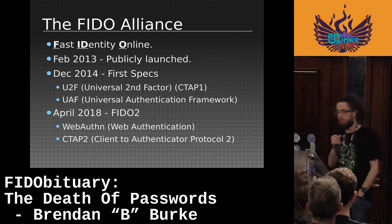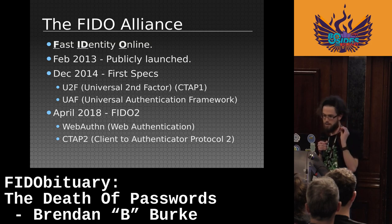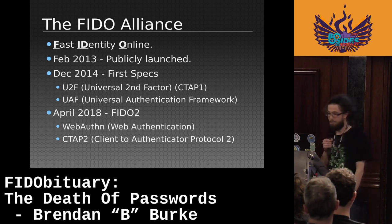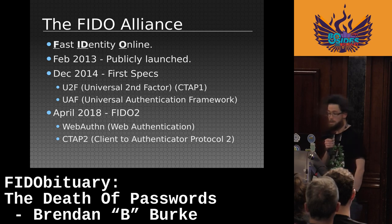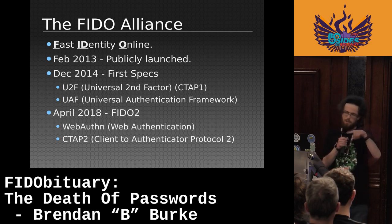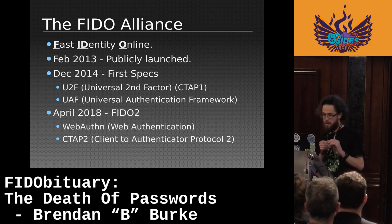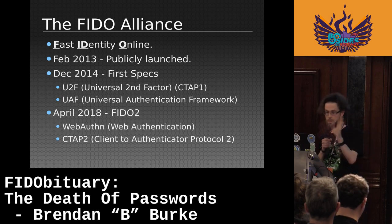WebAuthn is a W3C recommendation defining an API enabling the creation and use of strong, attested, scoped, public key-based credentials for web applications for the purpose of strongly authenticating users. WebAuthn is now built into practically every modern web browser, so from a developer point of view authentication becomes a whole lot simpler, with numerous libraries for communicating with the WebAuthn API. CTAP2 is exactly as the name suggests — Client to Authenticator Protocol. U2F was retroactively called CTAP1 since it features many similarities. CTAP is implemented by the OS — Windows, Apple, Android, Linux — so web server developers don't have to worry about it.